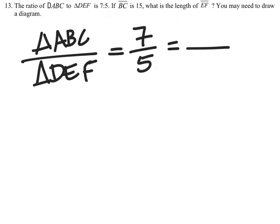And it shows us a side length for BC, which comes from triangle ABC, so it must be in the numerator. 15, and EF will be the unknown that we must find.